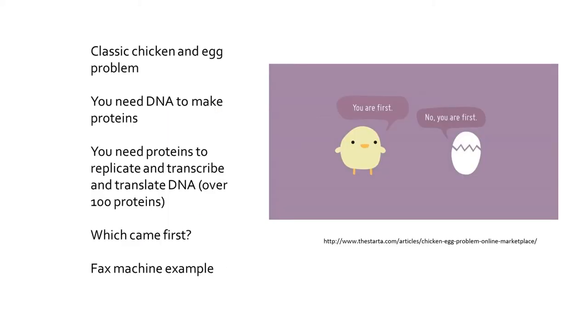So, with this background, we're now ready to understand the chicken and egg problem. You remember the chicken and egg problem. Which came first, the chicken or the egg? Well, you need a chicken to make an egg, but you need an egg to have made that chicken. So, which came first? This is exactly the same thing. You need DNA to make proteins.